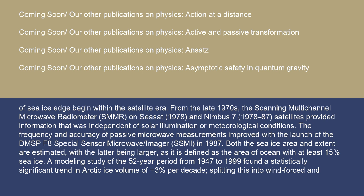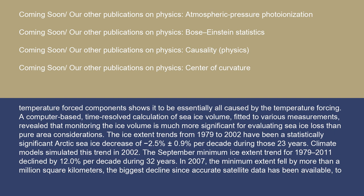Both the sea ice area and extent are estimated, with the latter being larger, as it is defined as the area of ocean with at least 15% sea ice. A modeling study of the 52-year period from 1947 to 1999 found a statistically significant trend in Arctic ice volume of minus 3% per decade, and splitting this into wind-forced and temperature-forced components shows it to be essentially all caused by temperature forcing. Ice extent trends from 1979 to 2002 showed a statistically significant Arctic sea ice decrease of minus 2.5% ± 0.9% per decade during those 23 years.